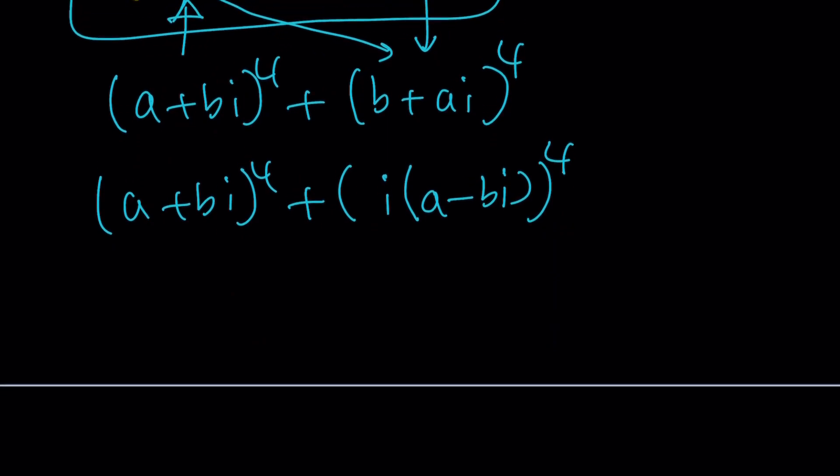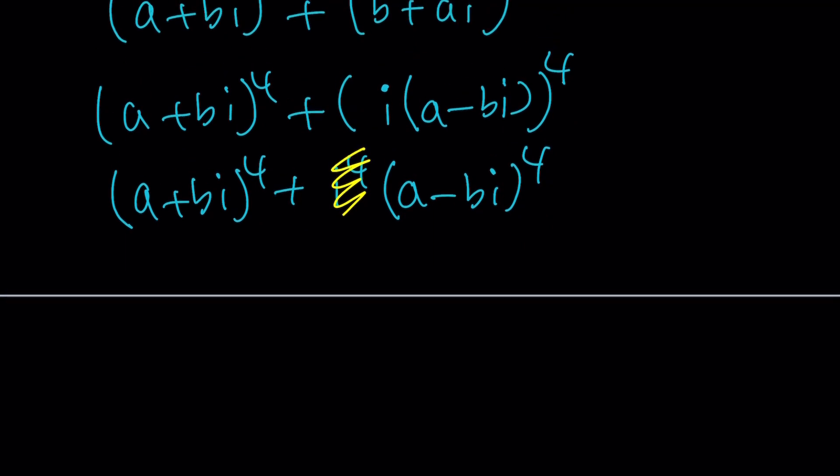Now how do you raise a product to the fourth power? Of course you're supposed to do each factor. So this is going to be i⁴ multiply by (a-bi)⁴. But remember i⁴ = 1. Because think about it, i², i³, i⁴ or i² squared. So this is one, I don't have to worry about it. That's what's nice about the fourth powers. I really like fourth powers.